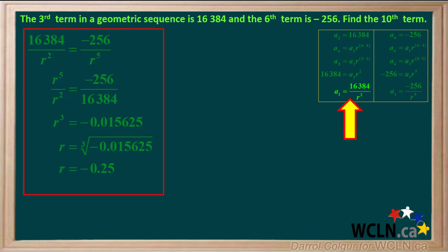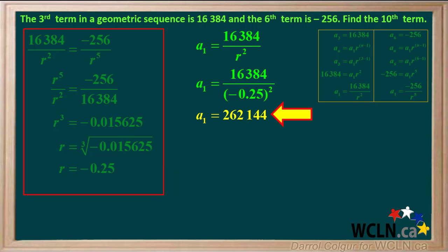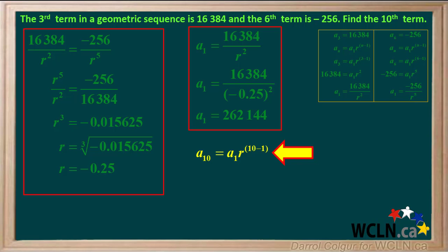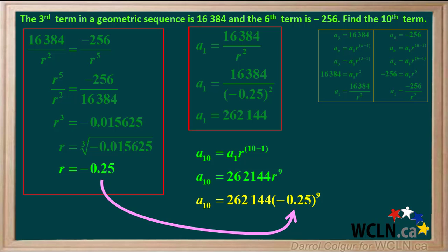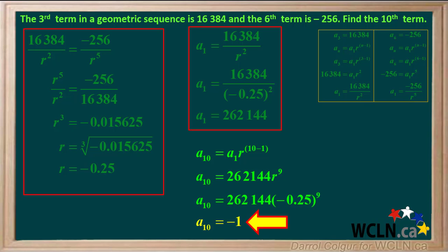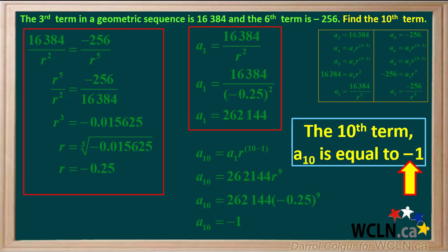Now that we know the value for r, we can find the value for term a1 using the equation a1 equals 16384 over r squared. We'll substitute negative 0.25 for r. 16384 divided by negative 0.25 squared works out to 262144, so a1 equals 262144. Our last step is to find the value of a10: a10 equals a1 times r to the power of 10 minus 1. We substitute 262144 for a1, the exponent 9 for 10 minus 1, and negative 0.25 for r. Working this out, we get a10 equals negative 1. So the tenth term of this sequence is equal to negative 1.